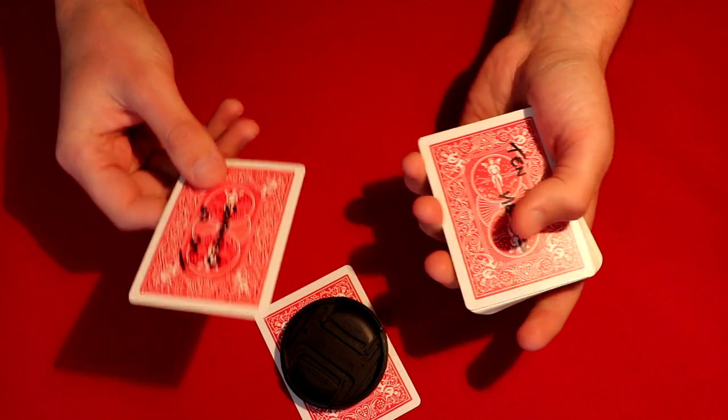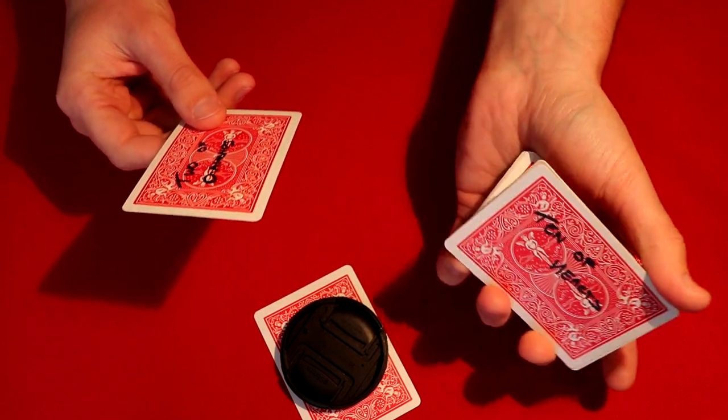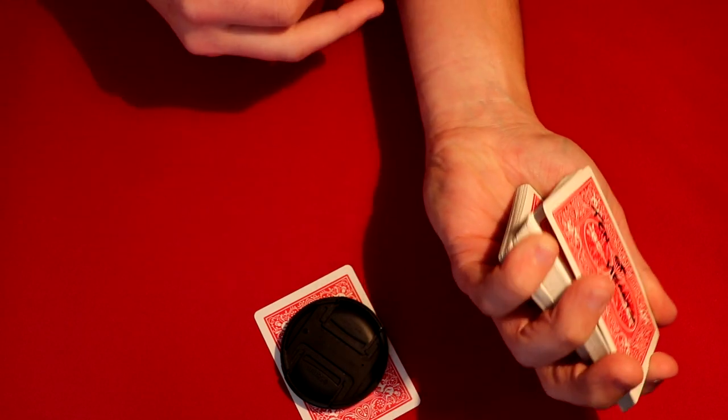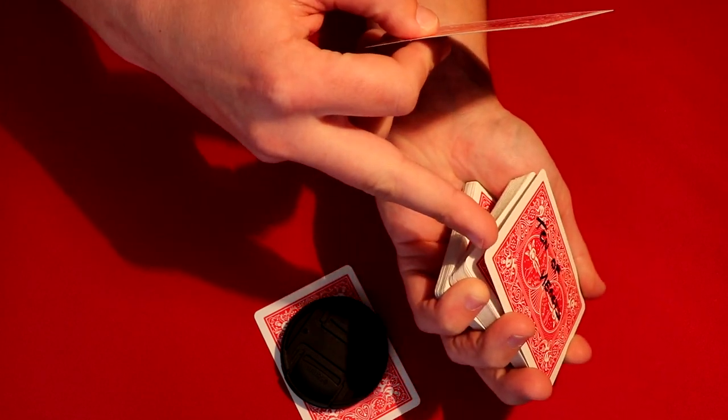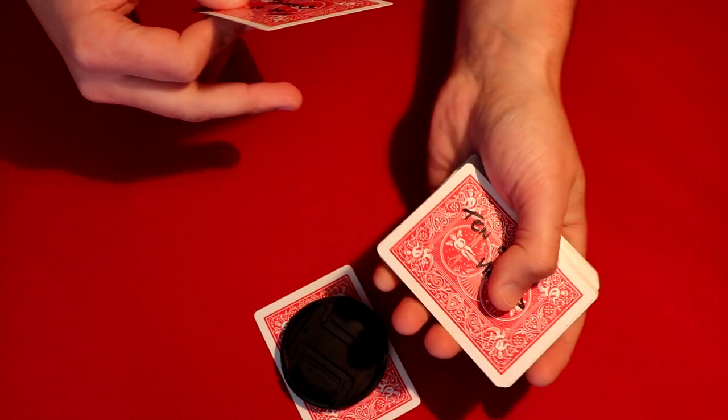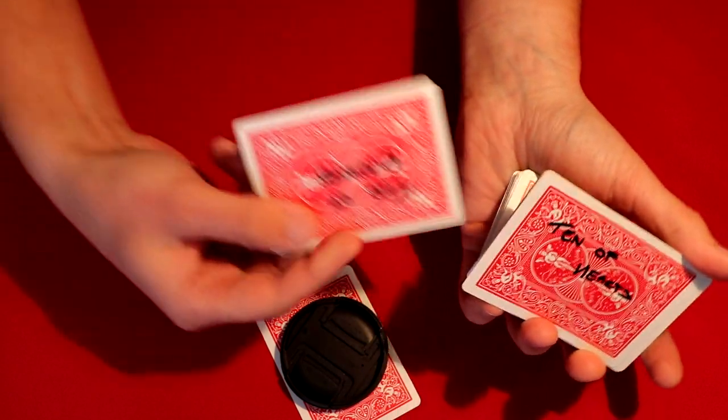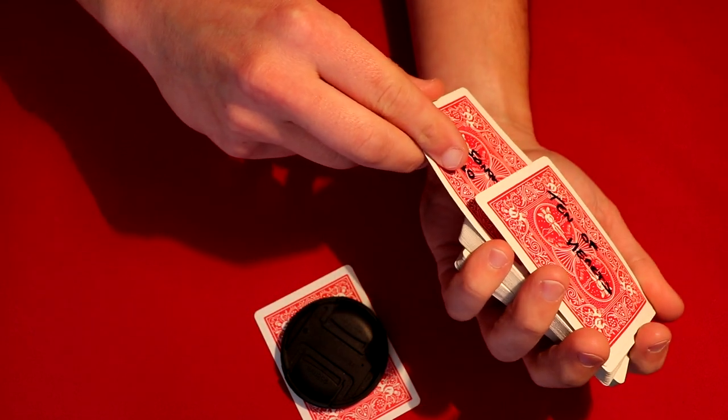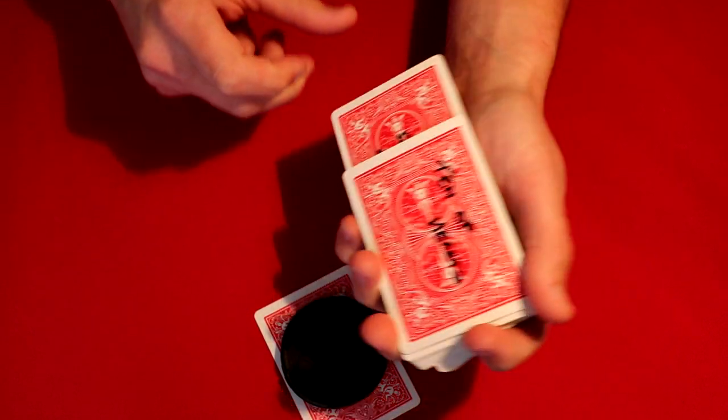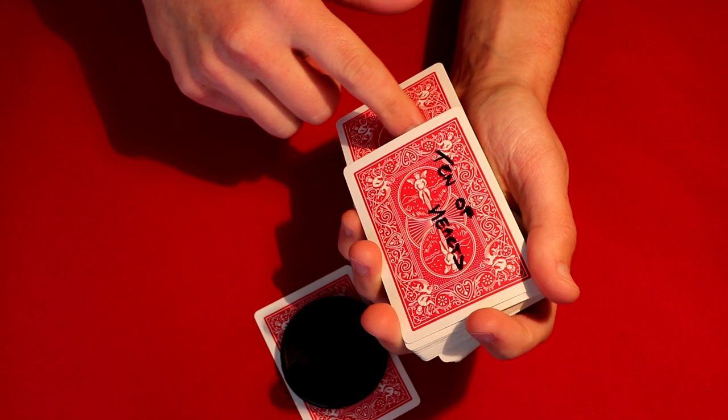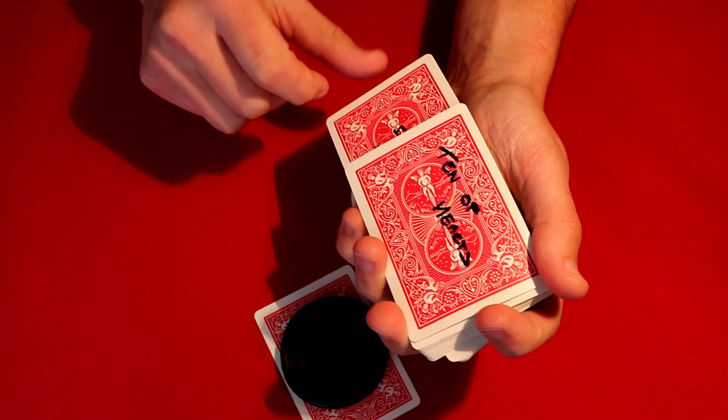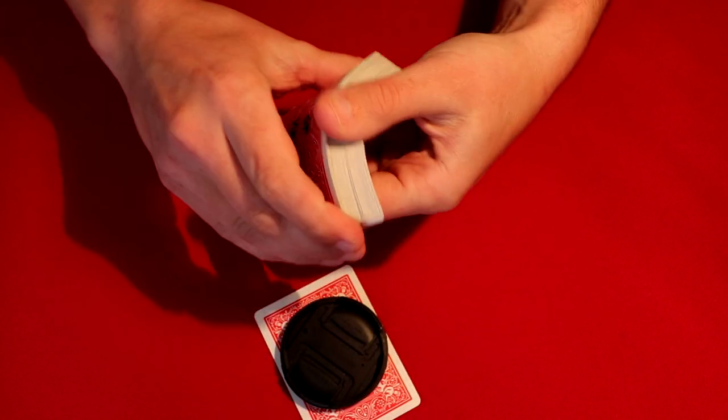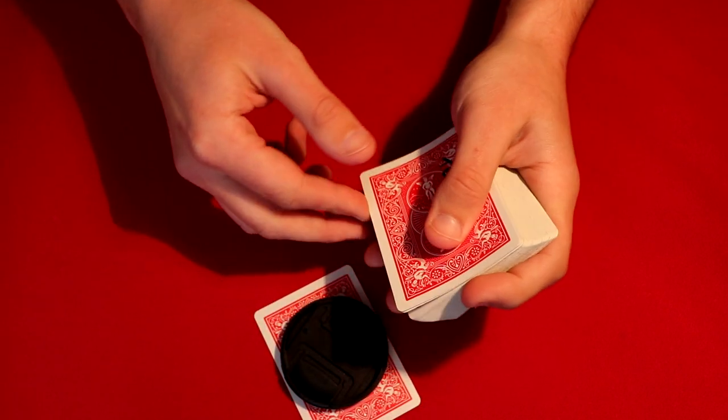But essentially all you're doing is propping up the card on top, you get a pinky break underneath the top card, and what you're doing is as the deck's open with the pinky break, you're just sliding it just underneath into the second position. But to the spectator, there's going to be enough gap between the top card and this card that when you slide it in, it looks like it's in the middle. But in reality, it's actually at the top of the deck.